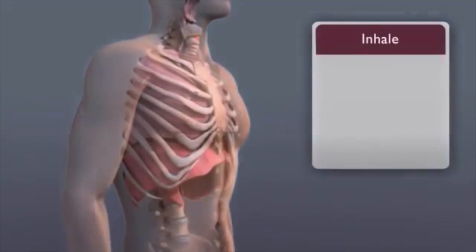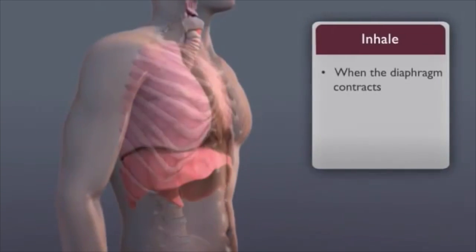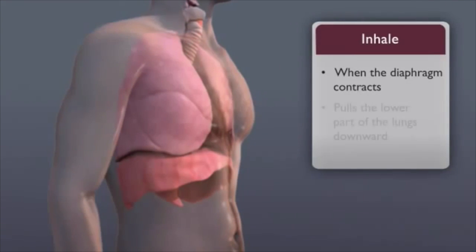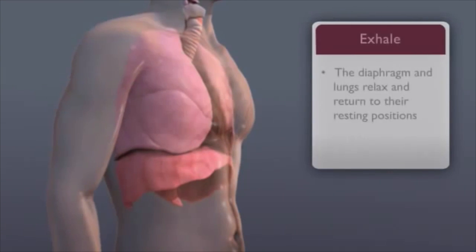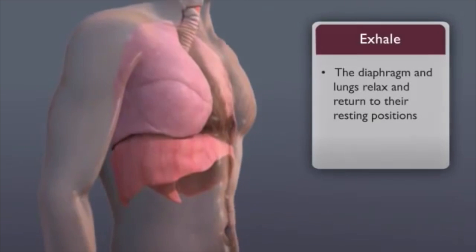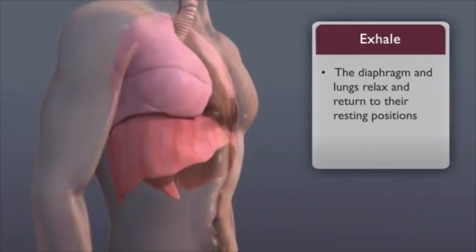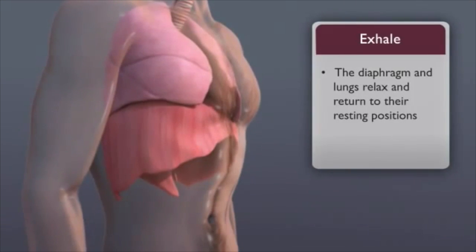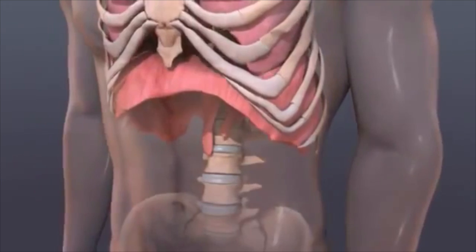We breathe in or inhale when the diaphragm contracts. This pulls the lower part of the lungs downward. When we breathe out or exhale, the diaphragm and lungs relax and return to their resting position.